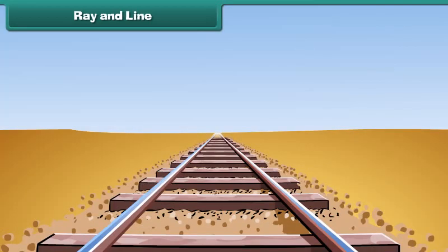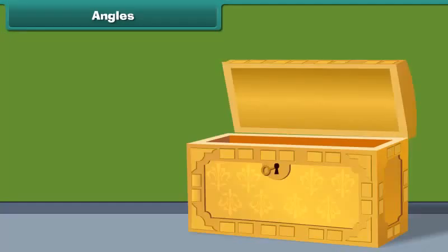Now notice this railway track. The two sides of track do not cross one another. These sides are parallel. Similarly, two lines are said to be parallel lines if no matter how far the lines extend in either direction, they never cross each another.